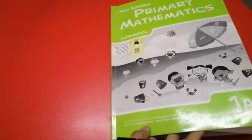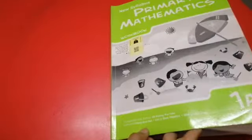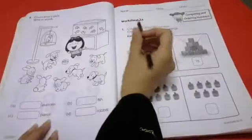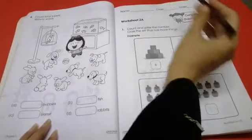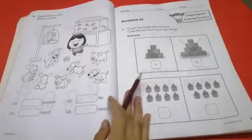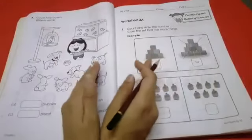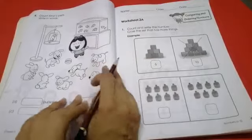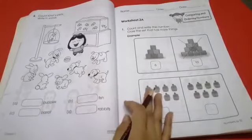Assalamualaikum students. Today we are going to study Primary Mathematics 1A, Worksheet 2A, page number 9 and our topic is comparing and ordering numbers. Comparing means that we put two things in front of us. Order means which thing is big and small. We evaluate it.